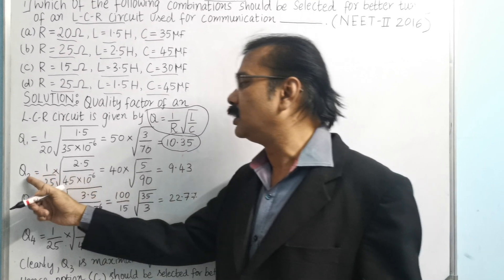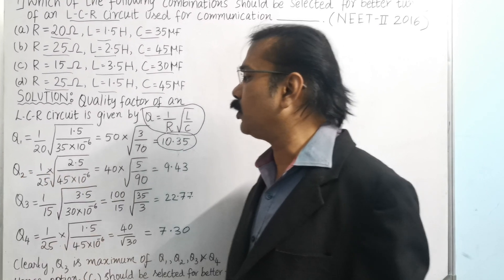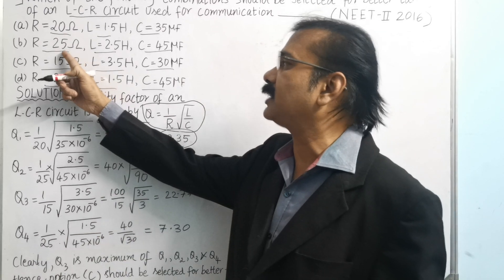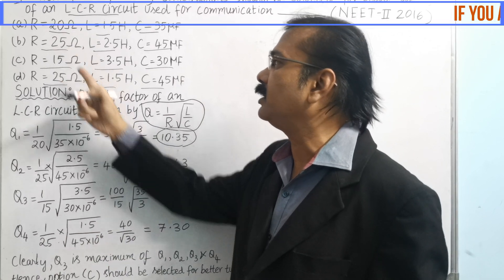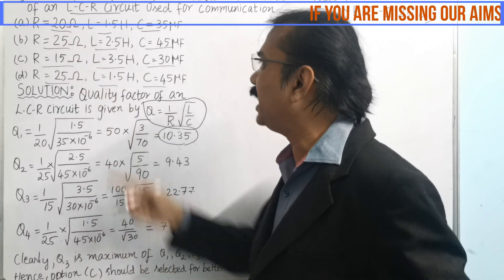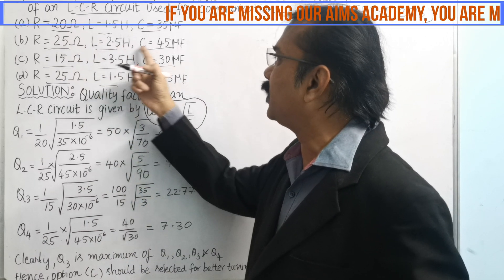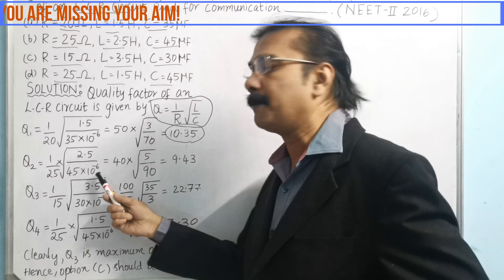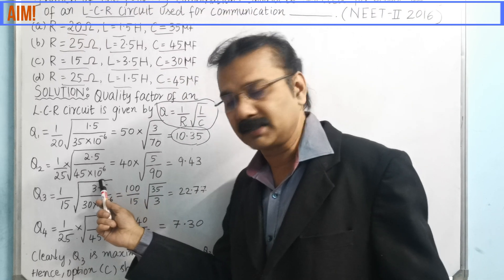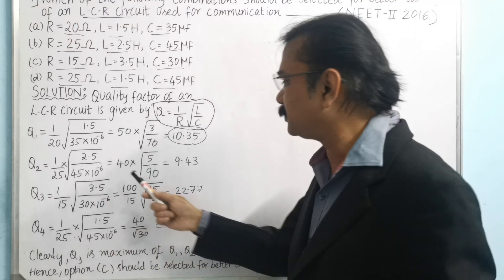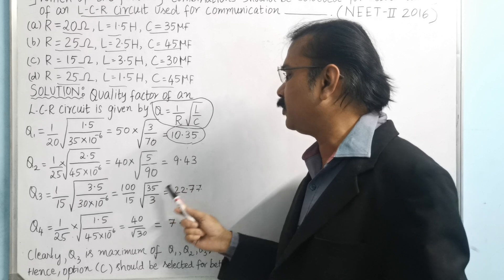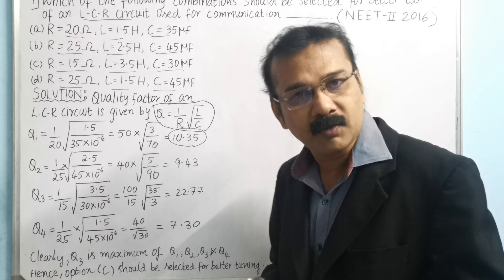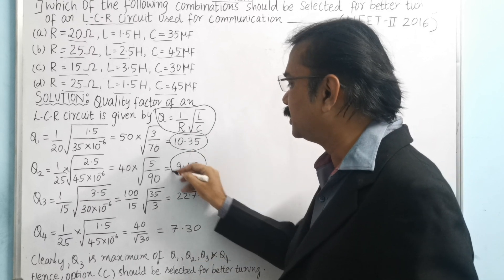Similarly, for Q₂, we substitute the value of R as 25, L as 2.5, and C as 45 × 10⁻⁶. If you substitute here, we get Q₂ = 9.43, which I am underlining.